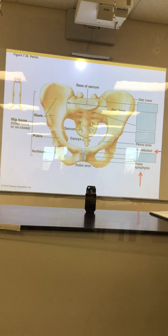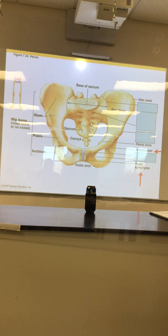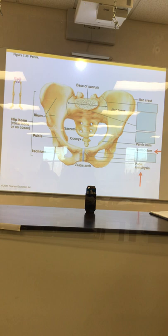The obturator foramen is just a big opening in the coxal bones — there are some muscles that go through there. And the greater sciatic notch — that's exactly what I was looking for. On page 54 we've got our ilium, ischium, and pubic bones; you can see the sacrum there with the coccyx — all fair game. Pubic arch and pubic symphysis — what's special about the pubic symphysis? It's made of fibrocartilage, because it's a symphysis.